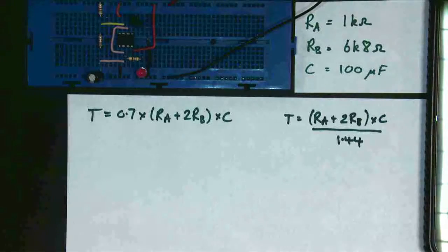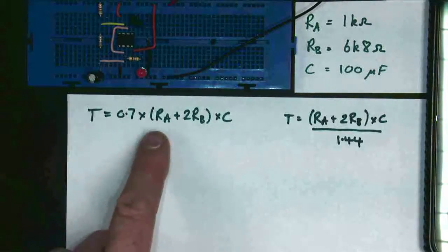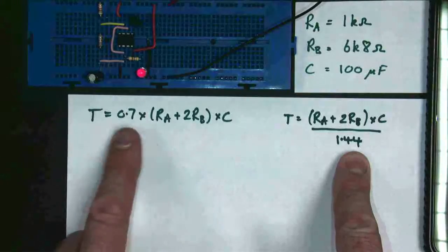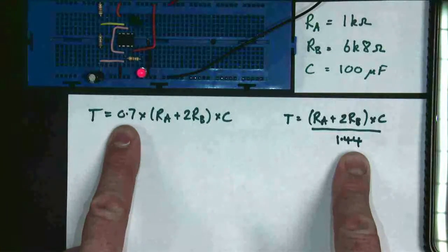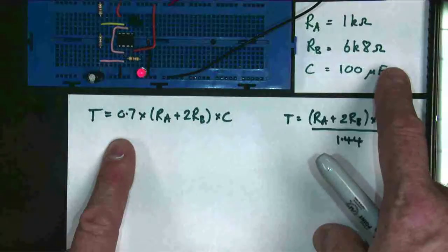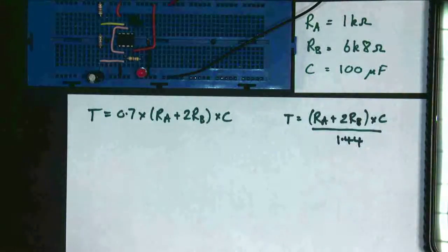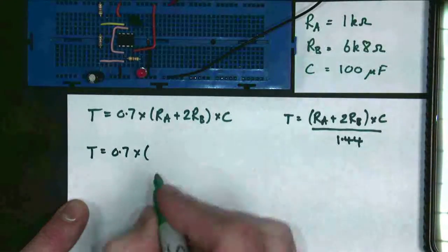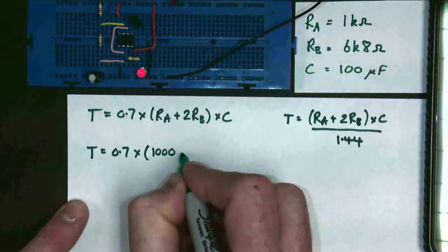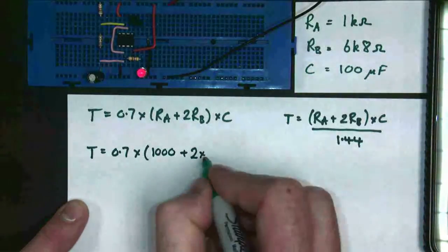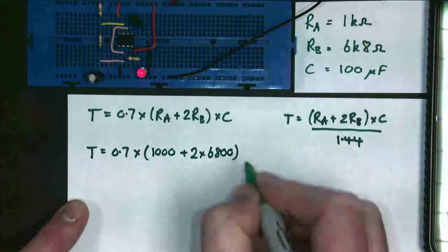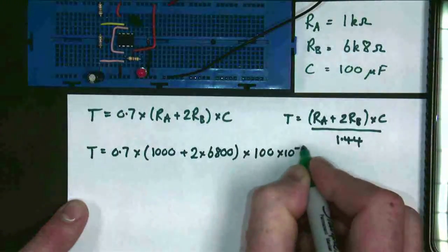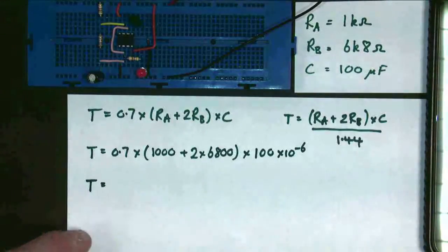So now we're going to try and calculate the time period, which we've already measured. I've got my time period equation here. These two equations are the same, because dividing by 1.44 is the same as multiplying by 0.7. So I'm going to put my values into this equation. We get T equals 0.7 times by RA in ohms, so 1 kilo ohm is 1,000 ohms, plus 2 times RB in ohms, which is 6,800, times by the capacitance, which needs to be in farads. So it's 100 and micro means times 10 to the minus 6. We're going to need a calculator to work this out.